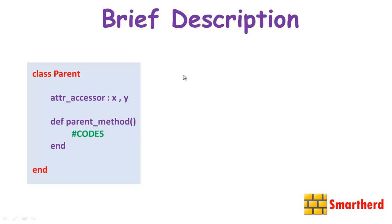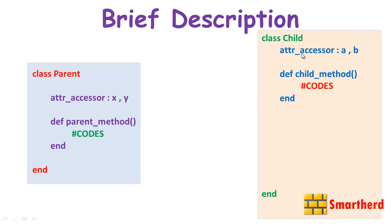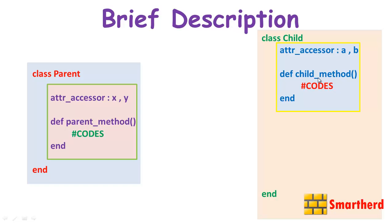Now let's define another class — class Child. Inside the class Child we have instance variables a and b, and child_method as a public method. But what if we also want to use x, y, and parent_method inside the class Child? That's where inheritance comes into action.